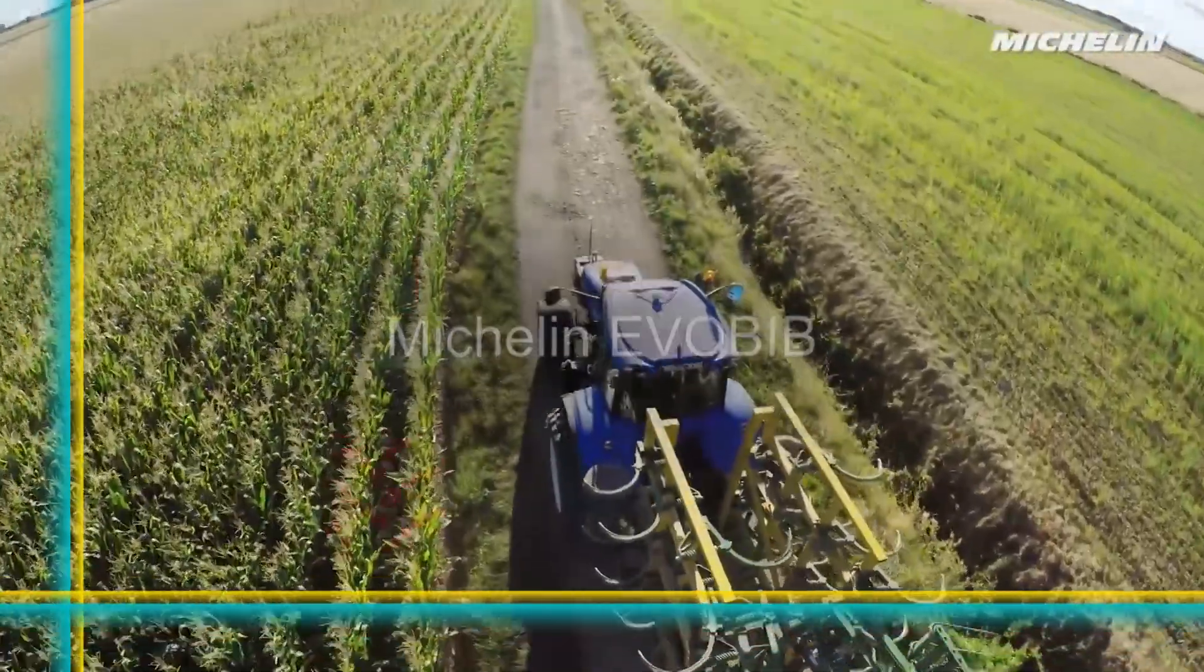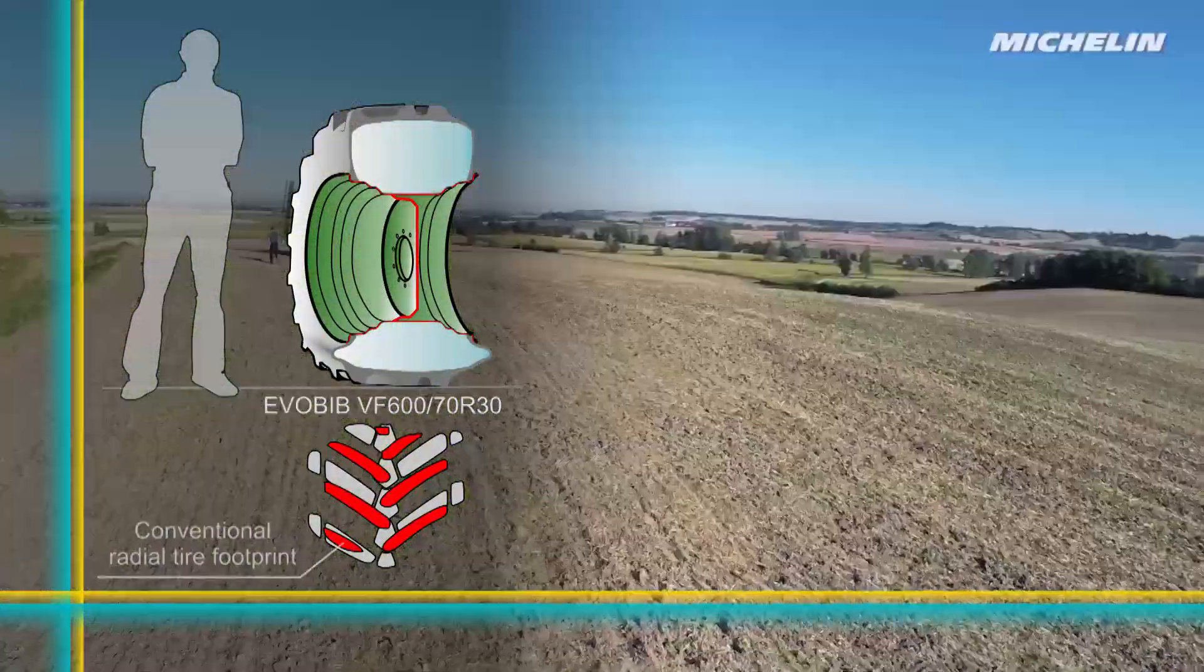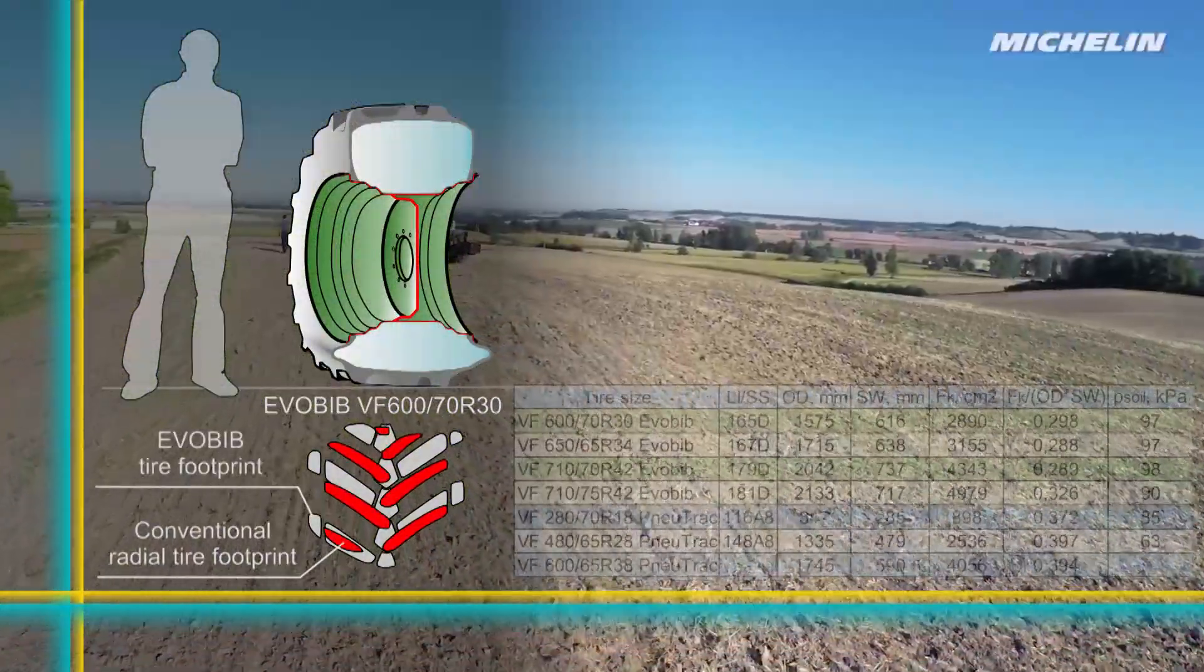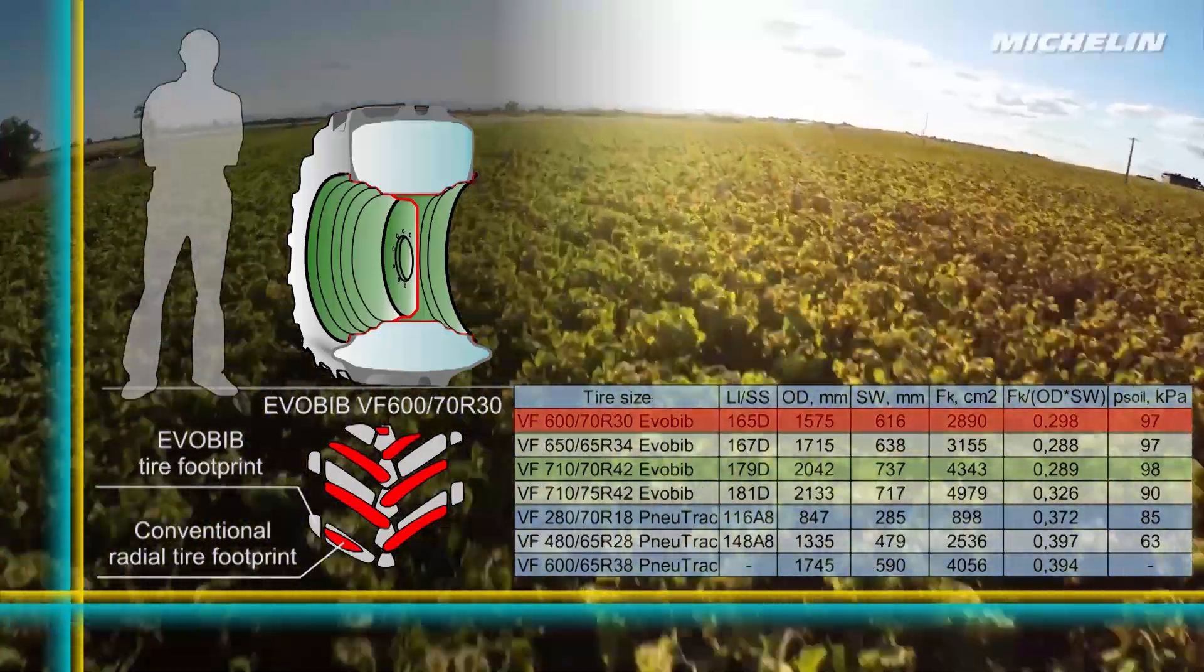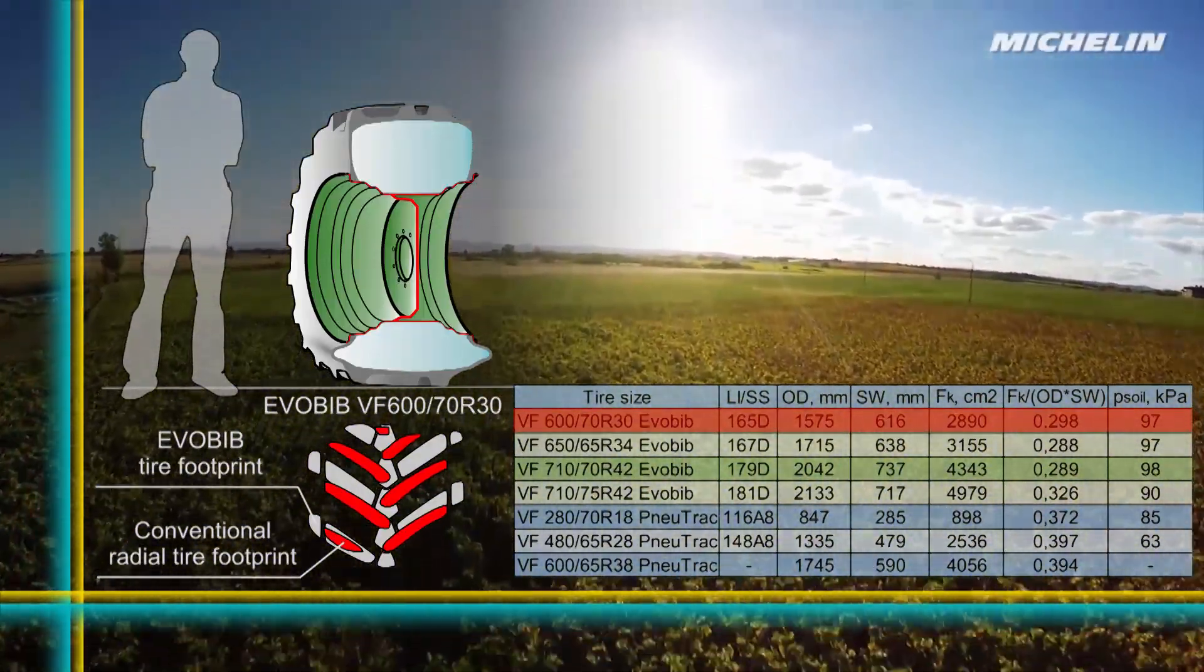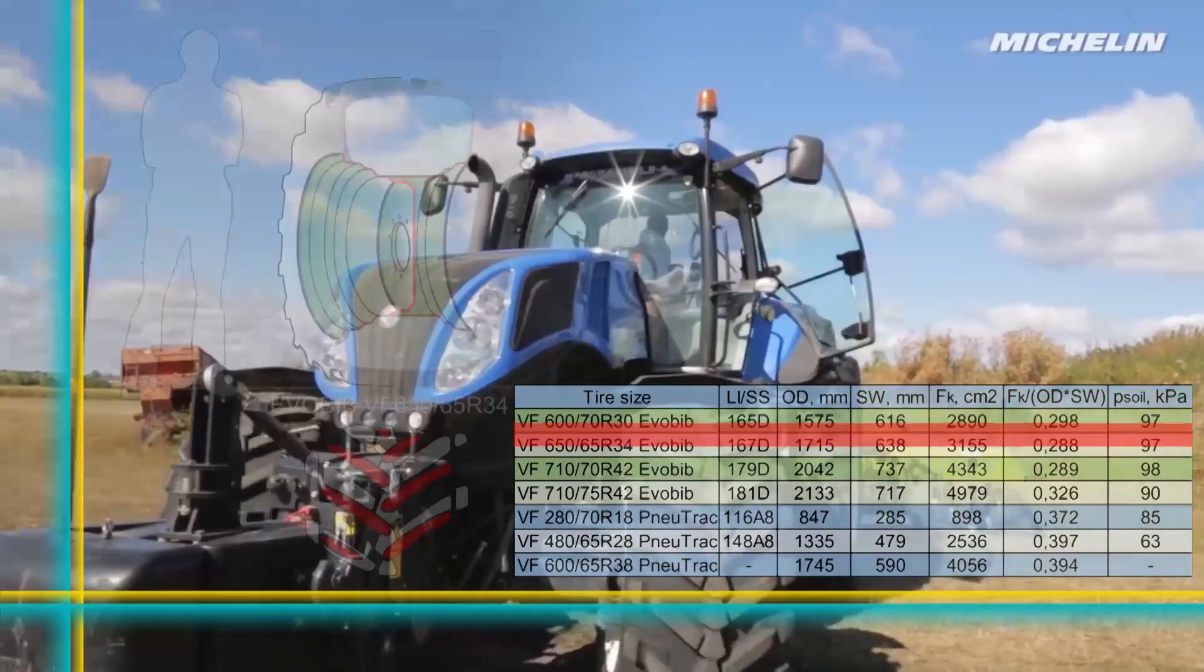The revolutionary new Michelin Evobub tire, designed specifically for tractors with central tire inflation systems, features an innovative two-in-one tire technology that transforms for optimum performance.